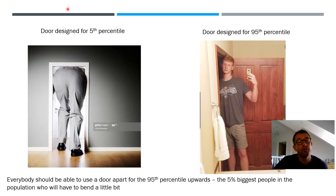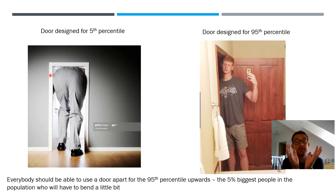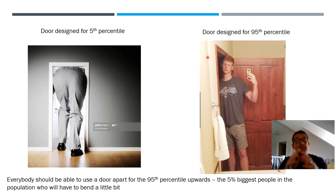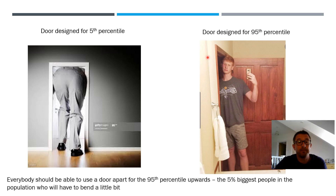If I designed a door for the fifth percentile of people, I'd be making quite a small door — causing problems for everybody over the smallest five percent of the population. So a door is in fact designed for the 95th percentile, so that everybody up to the 95th percentile can get through it fairly easily. Those people who are bigger will just need to dip their head slightly. It's really important to use the right measurement for the right design.